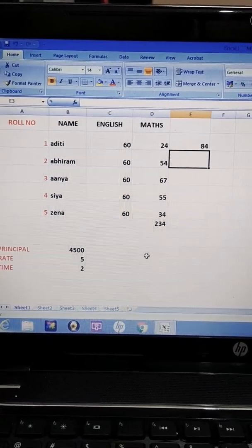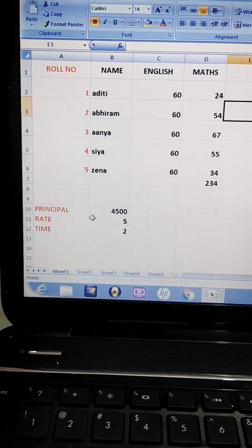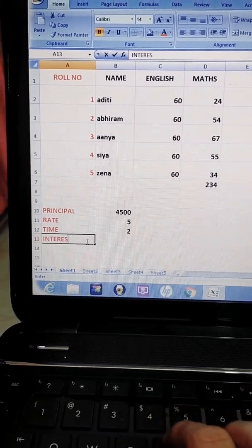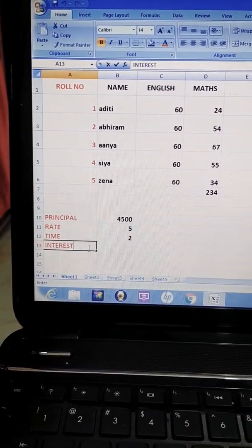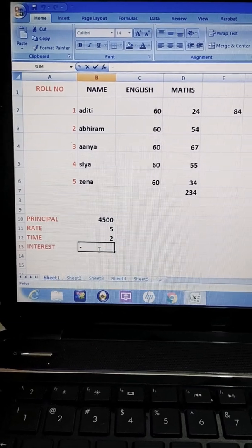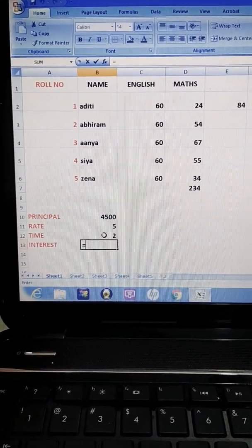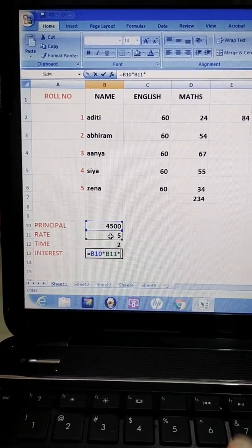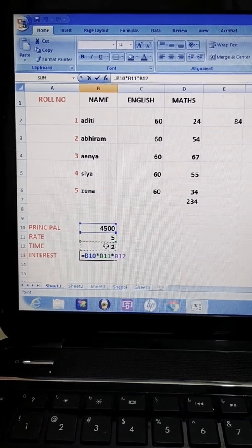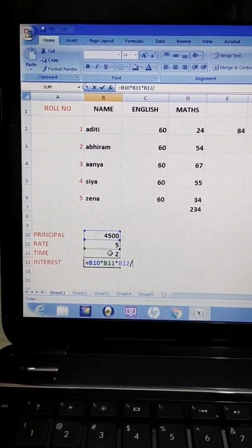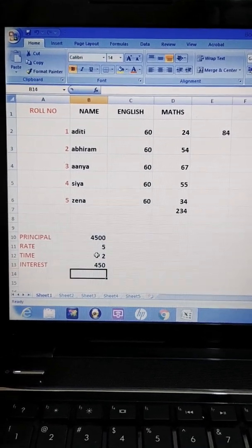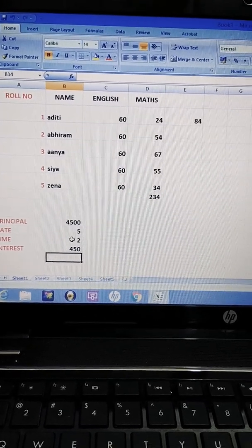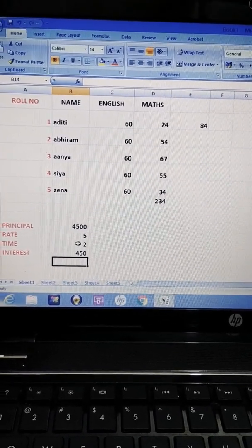I have written here principal, rate, and time. If you can see, I have to find interest. So what is the formula of interest? P into R into T divided by hundred. This is principle multiply rate multiply time divided by hundred. So answer is 450. This is the compound formula in which I have included two operators: multiplication as well as division.